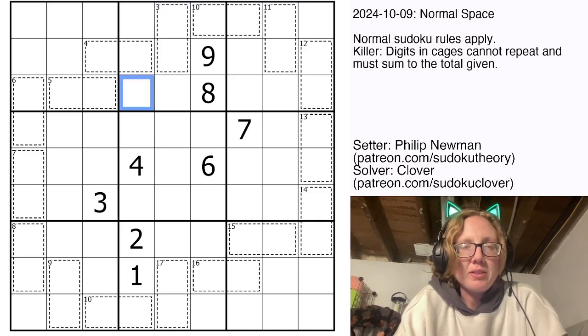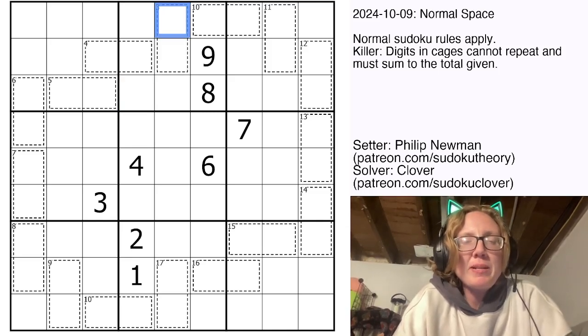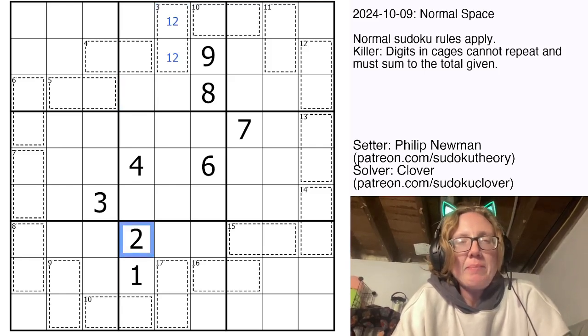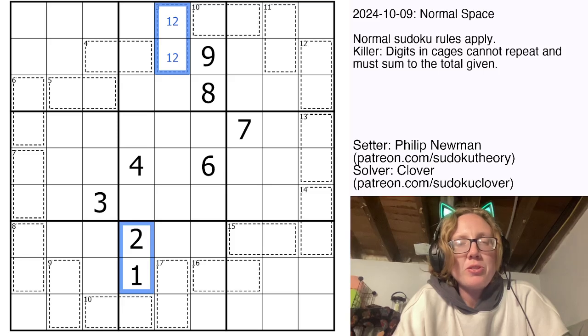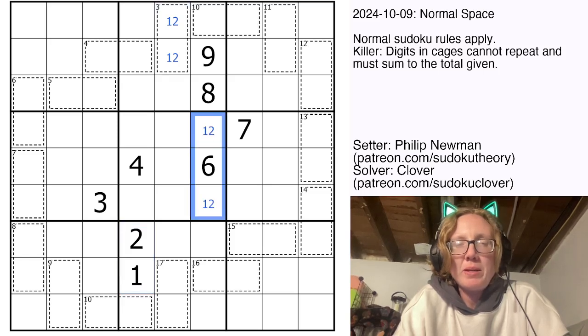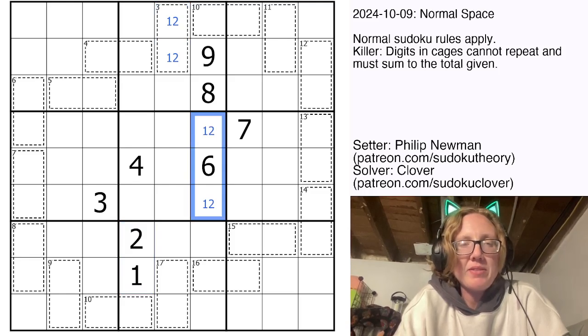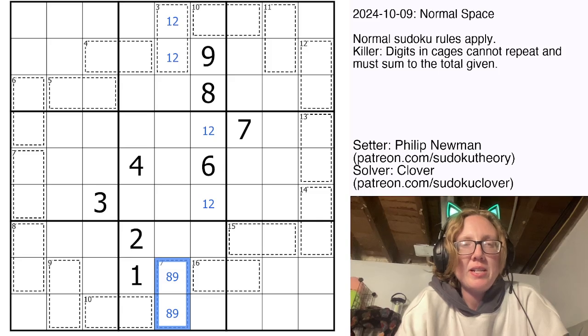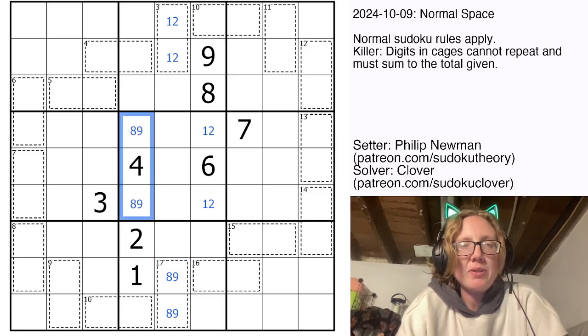So let's have a look. 3 is always going to be 1 plus 2, and because we have a 1 and 2 here and a 1 and 2 here, the only places for 1 and 2 to go in this region in the middle are there and there. 17 will always be 8 plus 9, so similarly 8 and 9 have to go there and there.